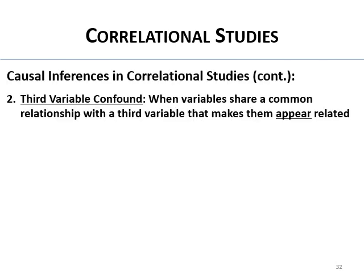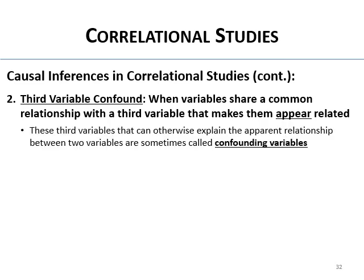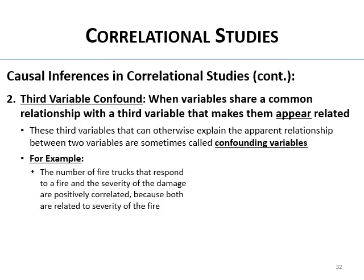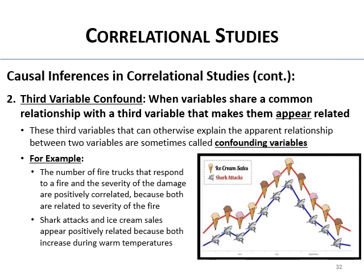There's something called the third variable confound: when two variables share a common relationship with some third variable, making them appear related when they're not causally linked. The number of fire trucks at a fire and severity of damage are positively correlated — but both are caused by fire severity, not by each other. Shark attacks and ice cream sales are also strongly positively correlated — but both are driven by warmer temperatures. Shoe size and reading comprehension are positively correlated across all ages because age drives both.